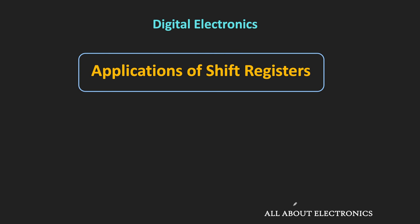Hey friends, welcome to the YouTube channel All About Electronics. In the previous video, we learned about the different types of shift registers. In this video, let us see a few applications of the shift register. Through the applications, we will understand how the shift register can be used for different applications. Since the shift register is made up of different flip-flops, it can be used for storing data, but apart from that, it can also be used for different applications.